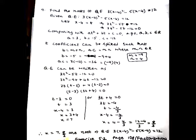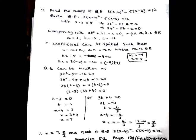Therefore x = 7 and x = 8/3 are the roots of the quadratic equation 3(x - 4)² - 5(x - 4) = 12. We should verify that x = 7 and 8/3 satisfy the given quadratic equation. This part is left as an exercise to the students. Students must verify that x = 7 and 8/3 are the roots.